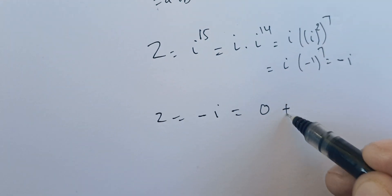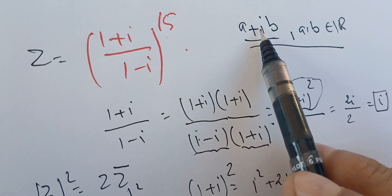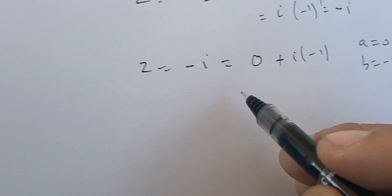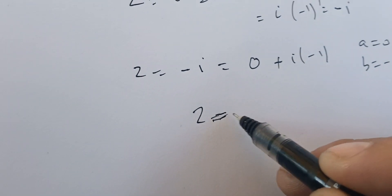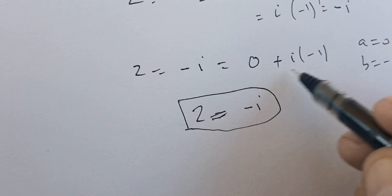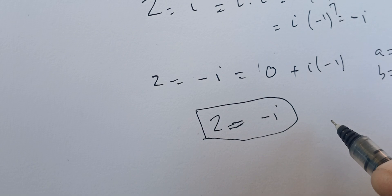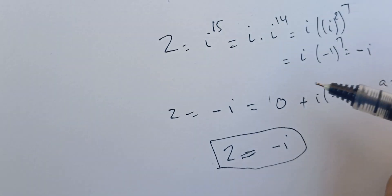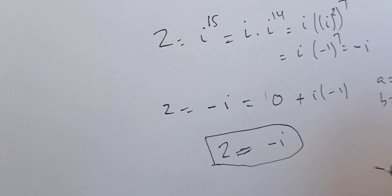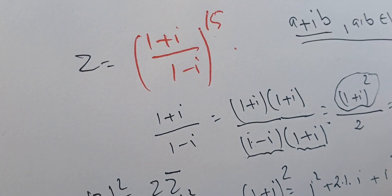Therefore z = 0 + i×(-1), which means we've written the number in the form a+ib with a = 0 and b = -1. This is the algebraic form of our number, so z = -i. We did the algebra, applied the definition, and found the algebraic form. If you see any errors or mistakes please let me know — thank you very much, I wish you a great day.